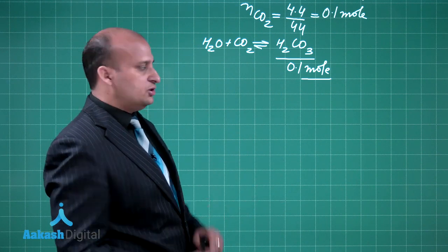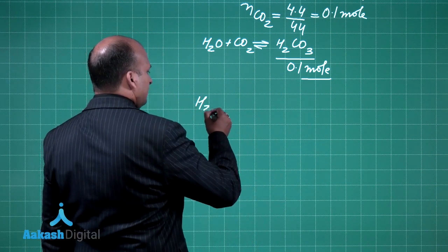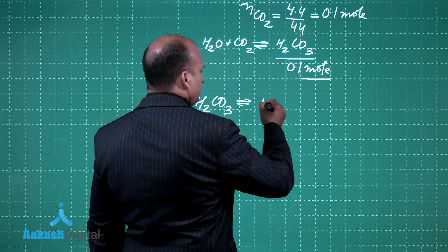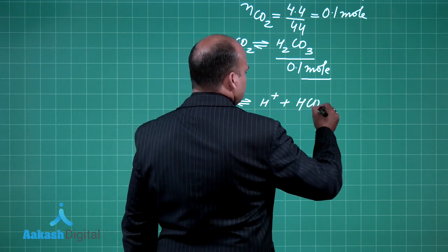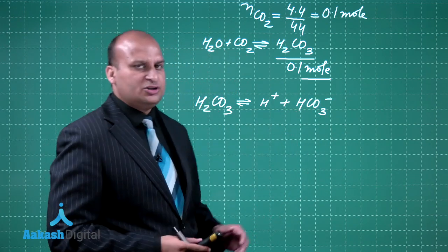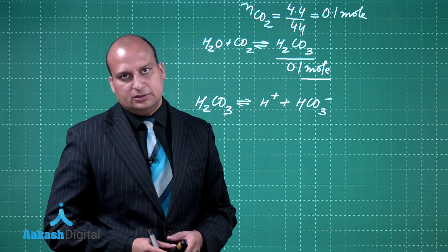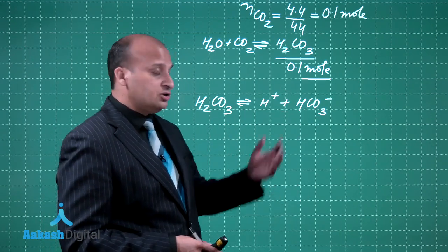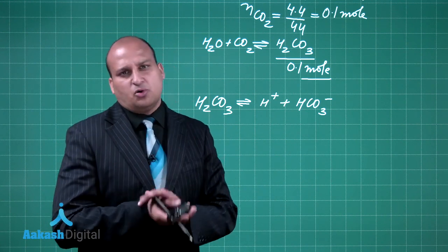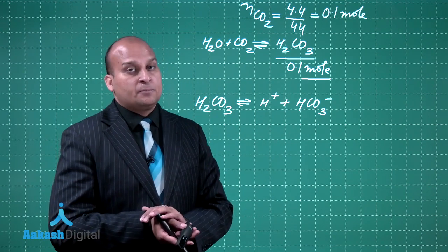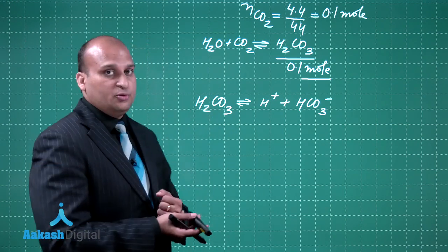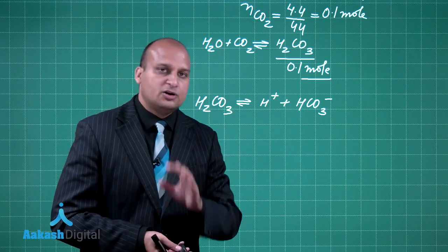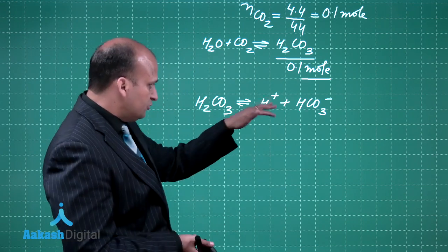How do I calculate the pH of this solution which contains 0.1 mole H2CO3? We are given the first dissociation constant of H2CO3. H2CO3 dissociates to give H+ plus HCO3-. In the second step, you can dissociate HCO3- to H+ and CO3 2-. But the second dissociation is very, very small, so you can neglect that particular part. Even if you are having a diprotic acid, you will use the first dissociation equation for the calculation of pH.